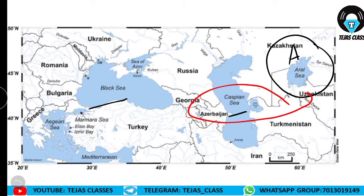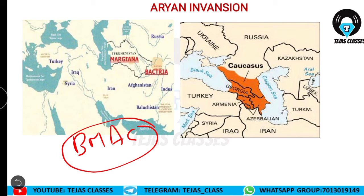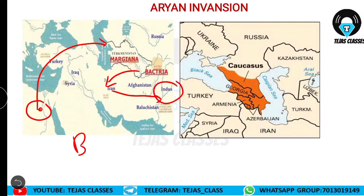From the larger map you can see the Margiana-Bactria BMAC area, with Iran, Russia, Turkmenistan, and Uzbekistan visible. From Turkey's Sintashta culture they came to these places, then from Bactria and Margiana into Iran, and finally entered India — you can see the Indus River here. Also visible are the Caucasus Mountains, Black Sea, Caspian Sea, and Aral Sea. These are the basic areas where Indo-Aryans lived before entering India.